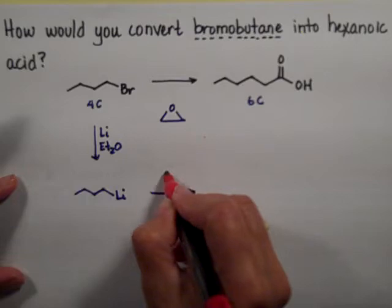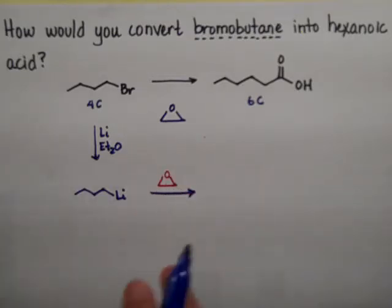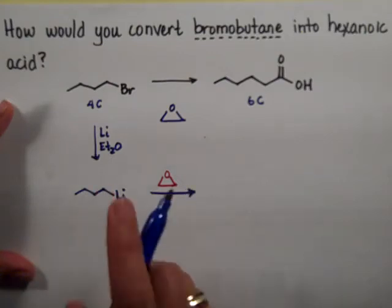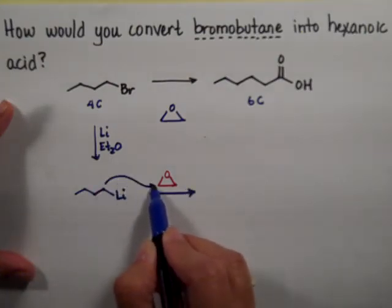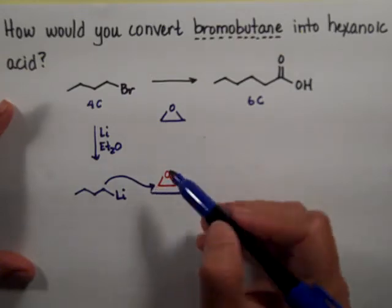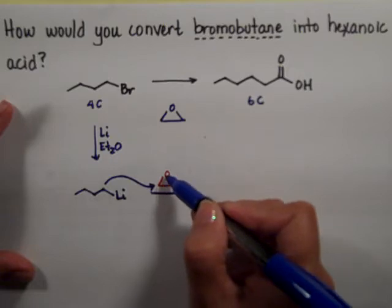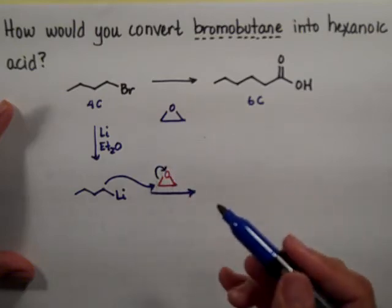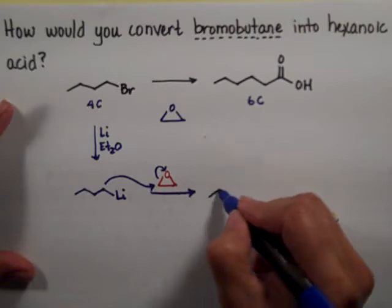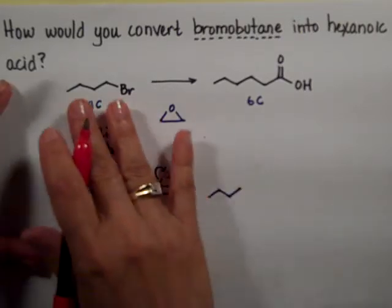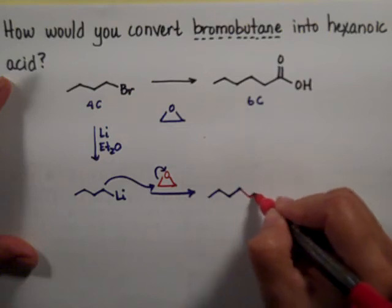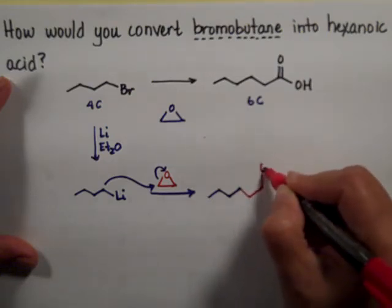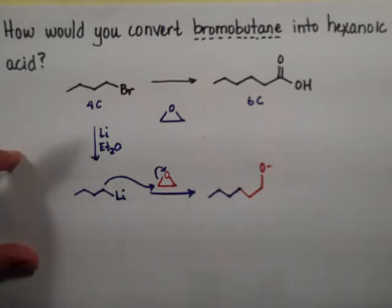I'm going to put the epoxide in red so that we can see where the carbons are going. This carbon is negative, so it's going to attack the epoxide — it attacks one of the carbons of the epoxide and breaks the bond between the carbon and the oxygen. Whenever you break that bond, you give the electrons to the most electronegative element, so the oxygen gets the electrons. We just added carbon one and two, and the second carbon has the oxygen. It's going to be negative until we quench the reaction and work it up, at which point it picks up a proton.